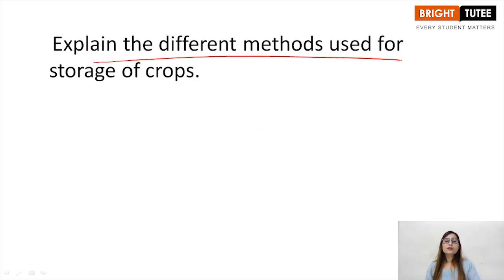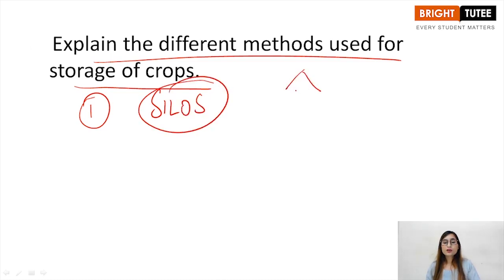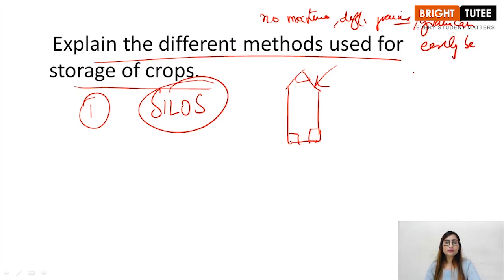Third question: explain the different methods used for storage of crops. The first one is silos. As we have discussed, there are long cylindrical structures with openings. They are present in sunlight, so there is no moisture. They can be used for different grains and the grains can easily be taken out from the openings.